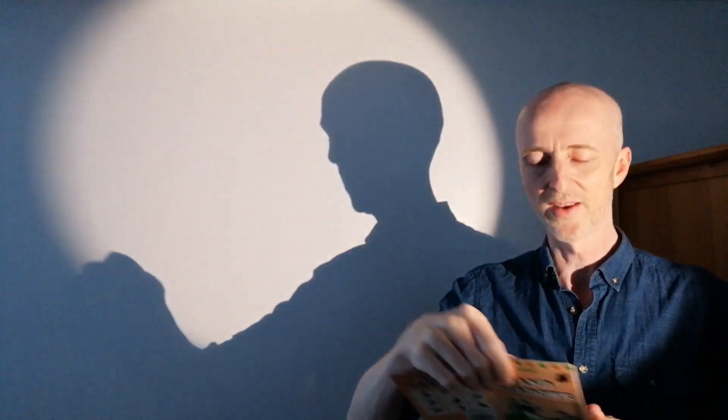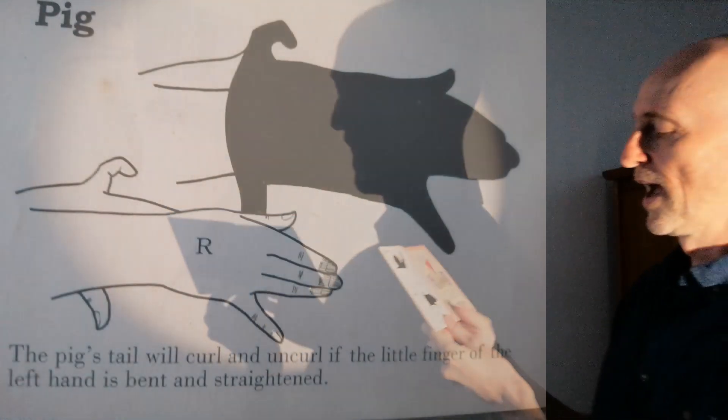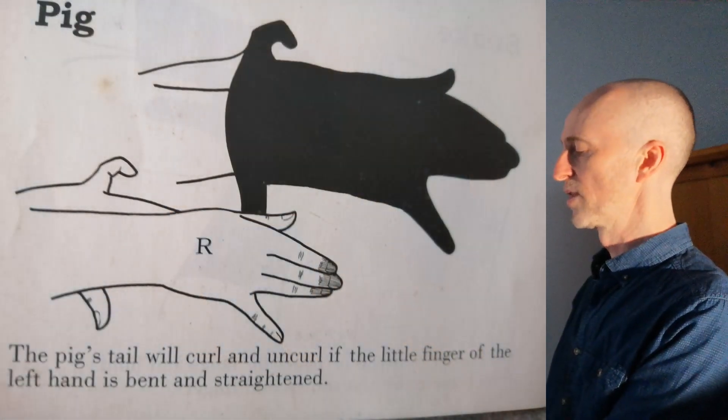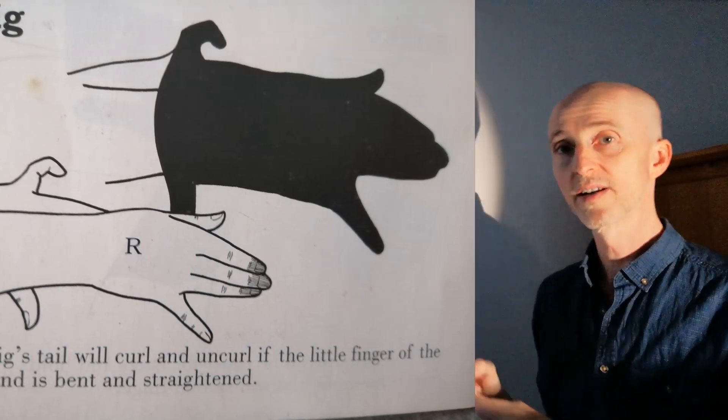The thing that we know about pigs is they've got little curly tails, so it's quite tricky to do with just fingers because fingers are quite solid things. Here's the little pig at the bottom, and this says the pig's tail will curl and uncurl if the little finger of the left hand is bent and straightened.